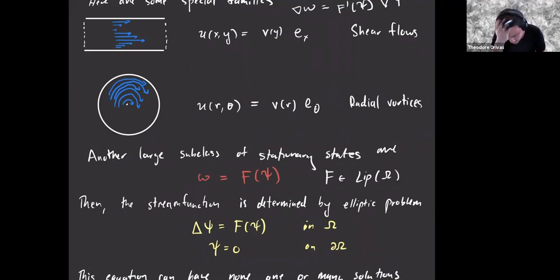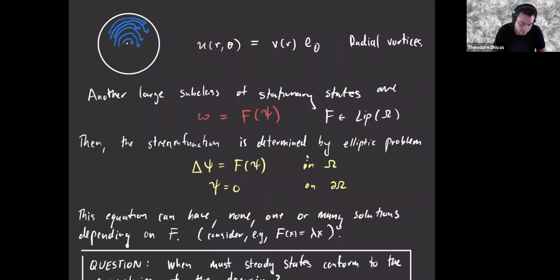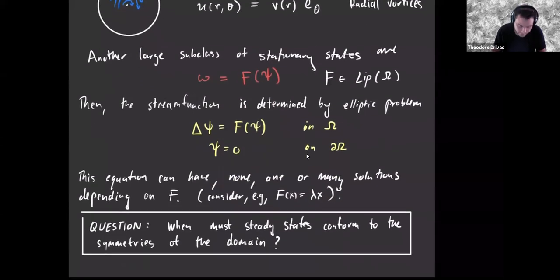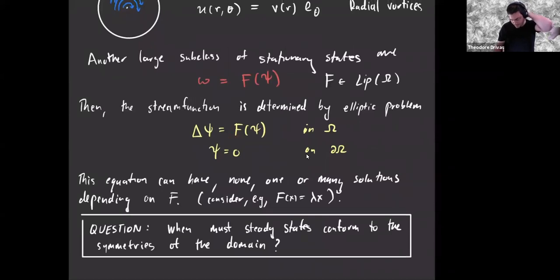In general, this is not a good equation in the sense that there can be no solutions, infinitely many solutions, or a unique solution. A good example is if f is an affine function — then this is just the eigenvalue problem. But there is a wide class of functions f for which there is a unique solution.